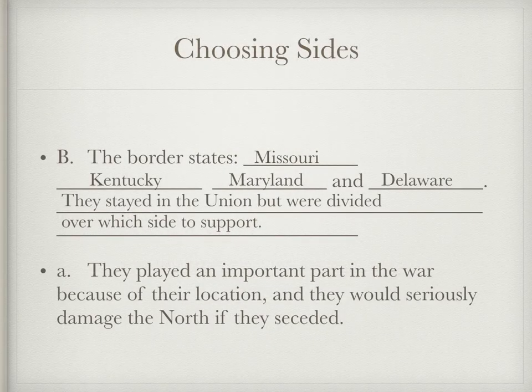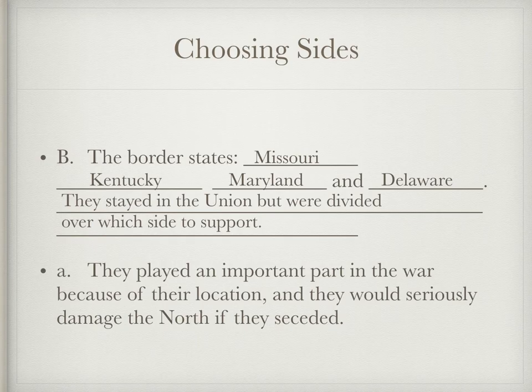Let's talk about border states. There are four border states. Even though slavery was legal in all four of them — Missouri, Kentucky, Maryland, and Delaware — they all stayed in the Union. But the people who lived there were very divided over who to support. Lincoln had to be careful; he didn't want any of these states to secede and join the Confederacy, so he wanted to make sure they stayed.